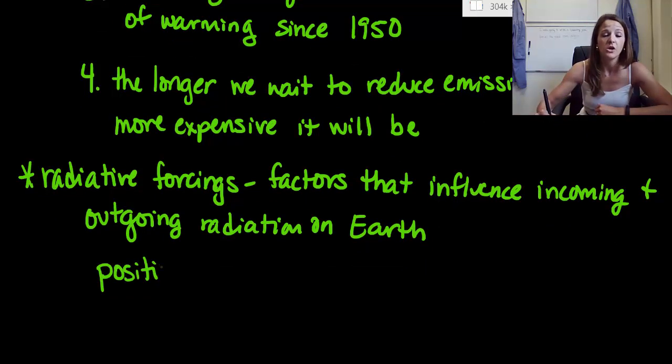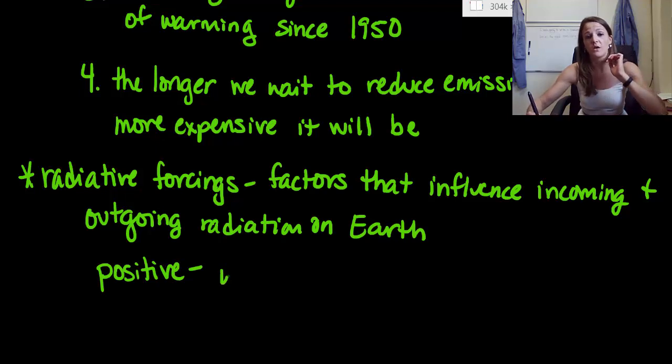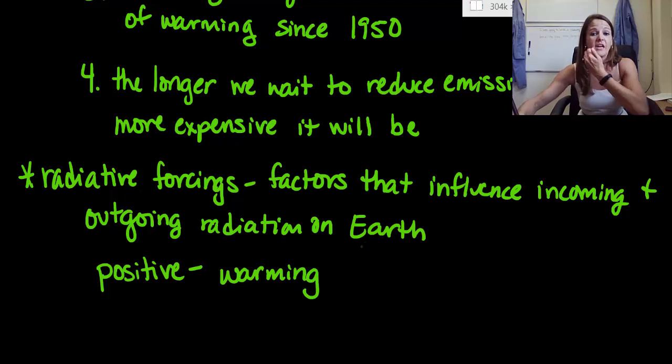We can either have a positive forcing or a negative forcing. So let's talk about positive first. Positive forcing would mean that we're having a warming effect. So our planet's getting warmer because of this radiation. And so we represent that with red. So warm, red, hot, red, that's kind of what we need to be thinking of.